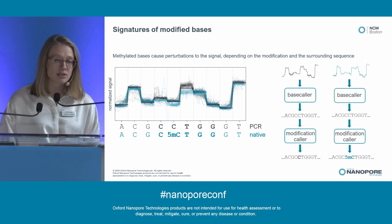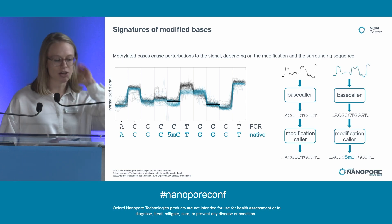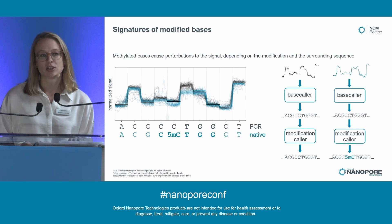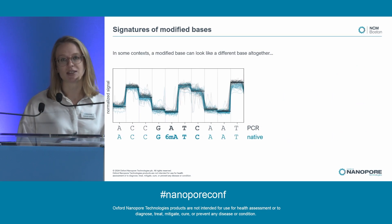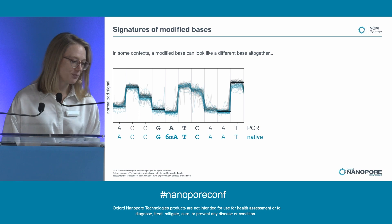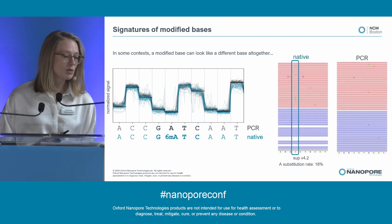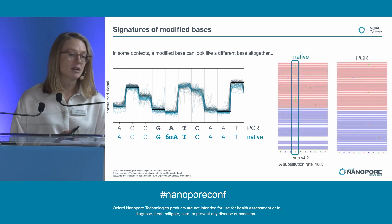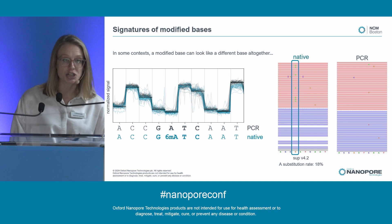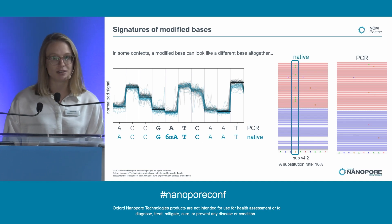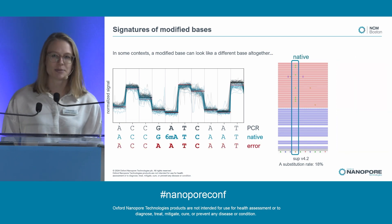The base caller's job is to identify the canonical sequence of bases, then pass over to the modification caller to classify modifications. The base caller has a tough job because modifications can cause different types of perturbations in different sequence contexts, and if we're especially unlucky, the modification can make the signal look similar to a different sequence of bases. For example, in the same isolate with a different motif — GATC with a 6MA — the base caller makes the same mistake relatively often: in 18% of reads, there is an A substitution at the G position of GATC. These are all on the forward strand next to the 6MA, and this error is not present in the PCR data.